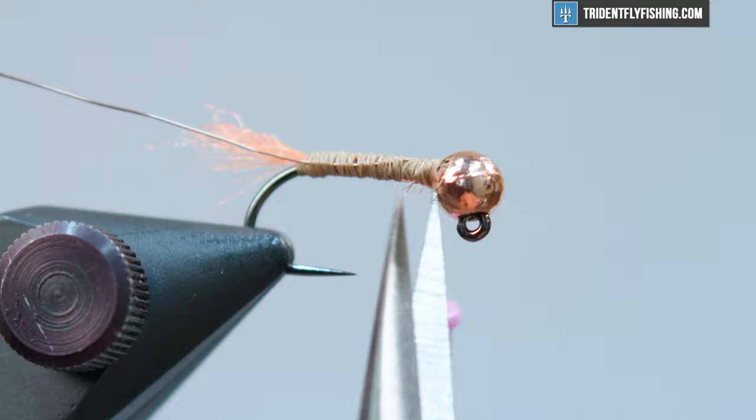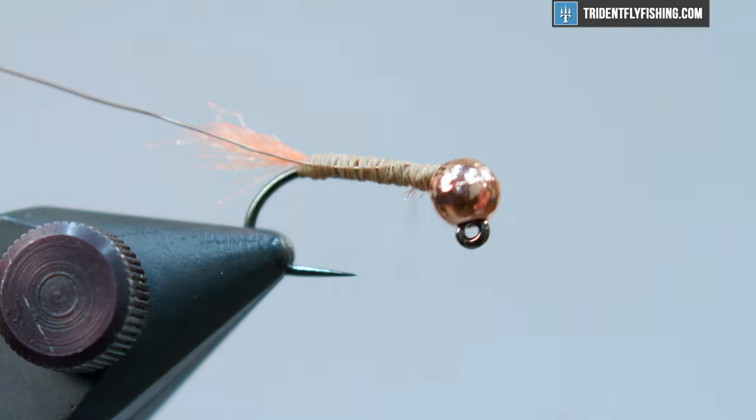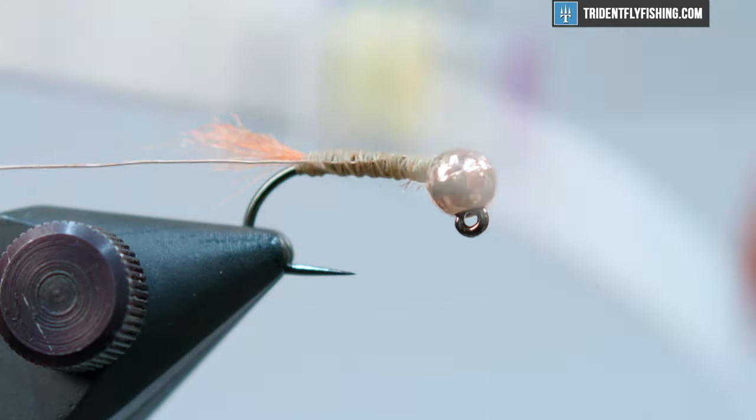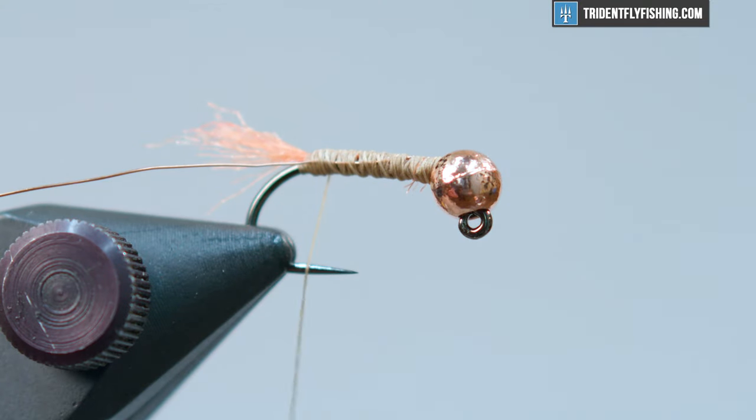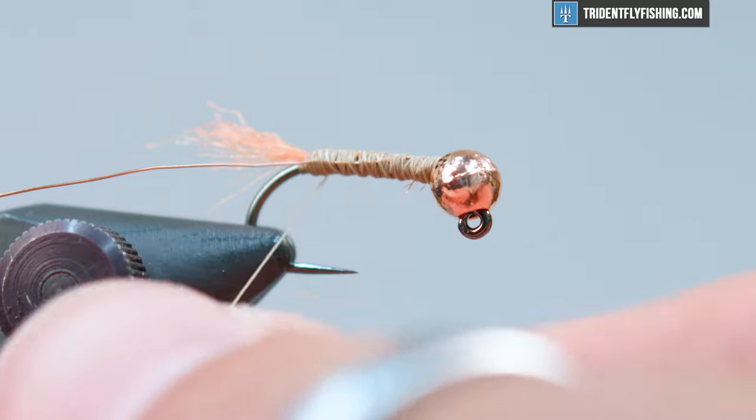We want this underbody to be nice and clean and tapered in general euro nymph fashion. Making that body with my thread. We want it to be larger in the thorax and skinnier at the tail and we'll mimic that with our dubbing which we're going to get into now.